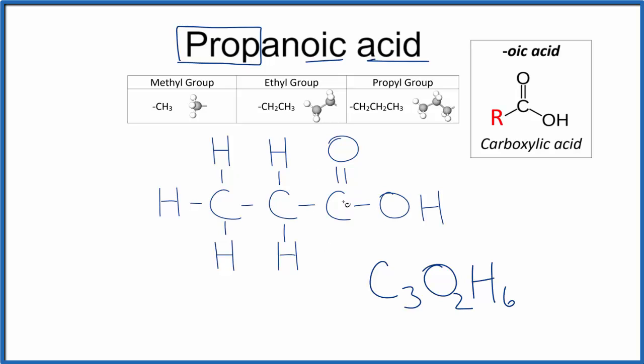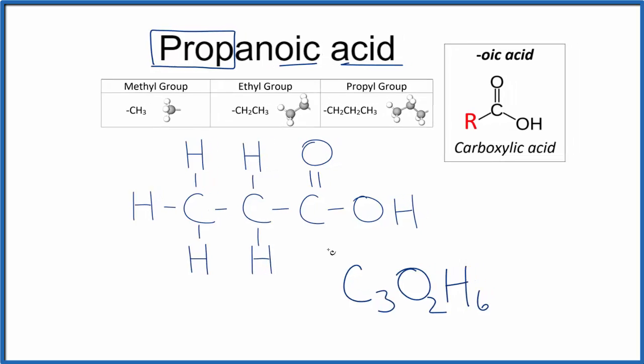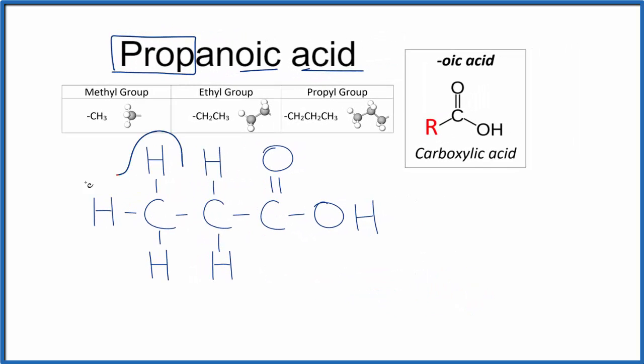It's probably better though to write the formula to show the structure within the formula. Here's how we do that. So we have CH3 on the end here, that's a methyl group, CH3, and we have the CH2, and then here on the end we have our carboxylic acid, this right here, COOH. We'll just write out COOH. And this is probably a better way to write the formula for propanoic acid.